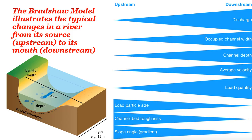Rivers normally flow from the upstream region down to the downstream region, and certain things change along this course. As you move from upstream to downstream, discharge increases, the width of the river increases, depth increases, velocity increases, and the amount of load carried increases. Moving from downstream to upstream, load particle size increases, channel bed roughness increases, and the slope angle or gradient increases.